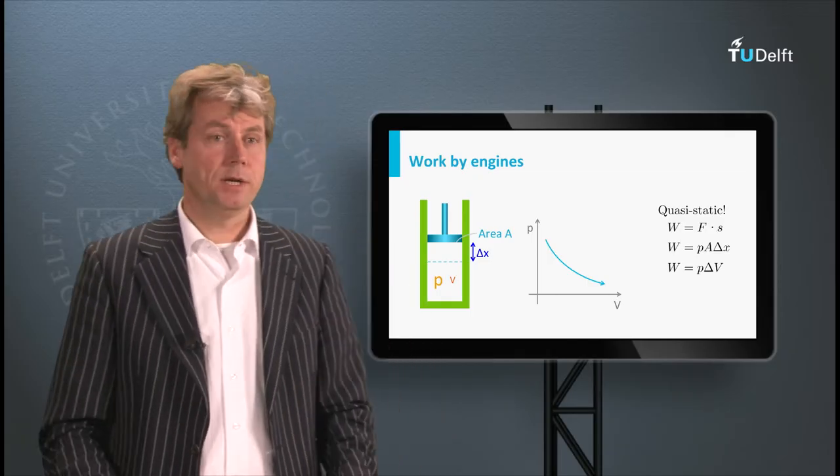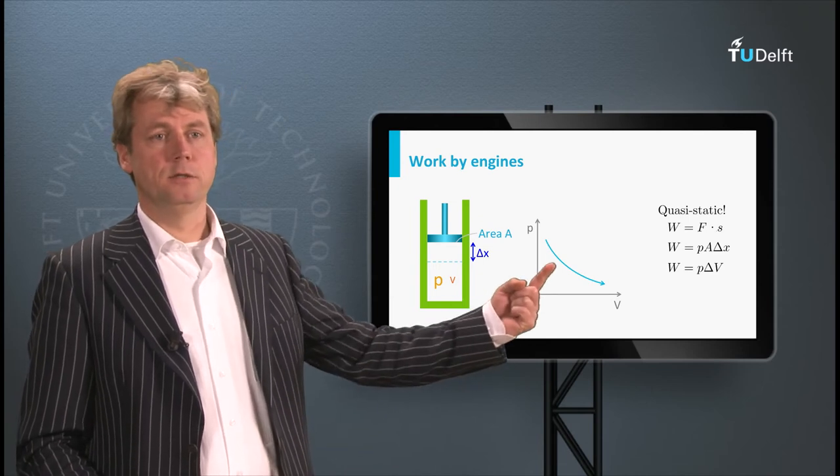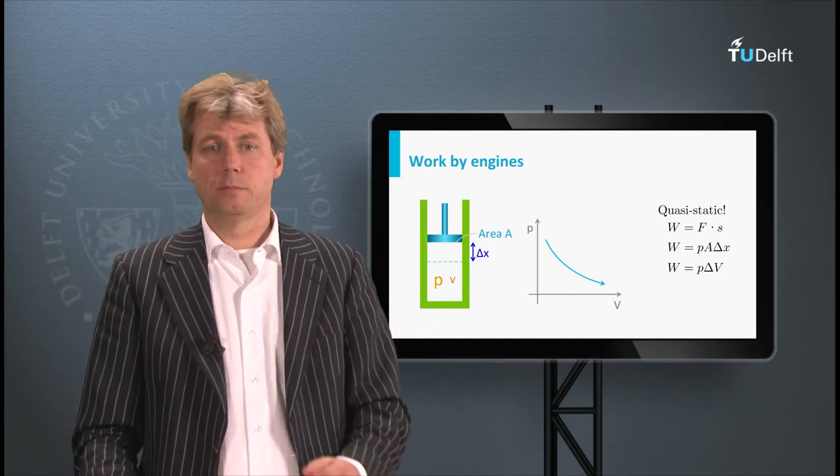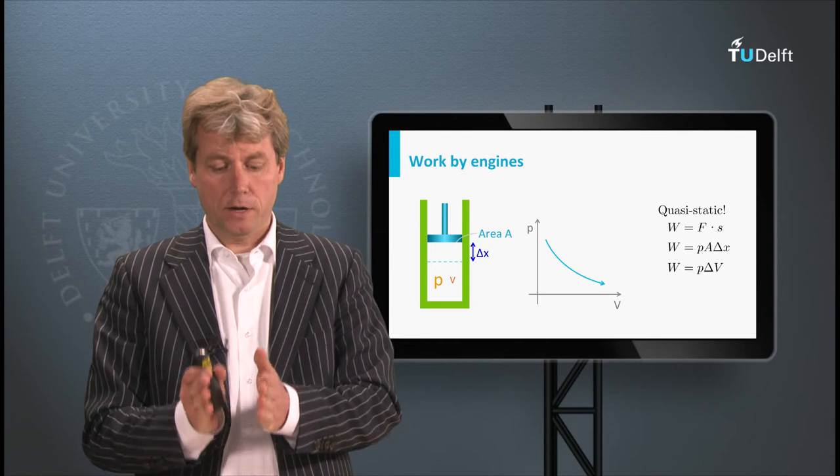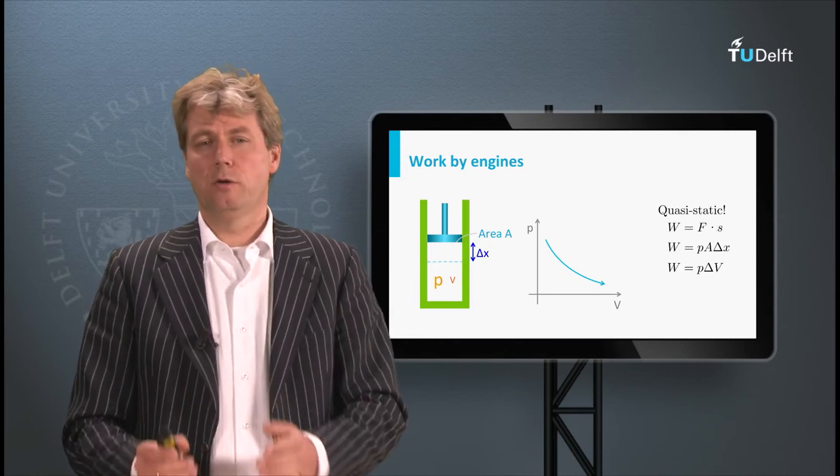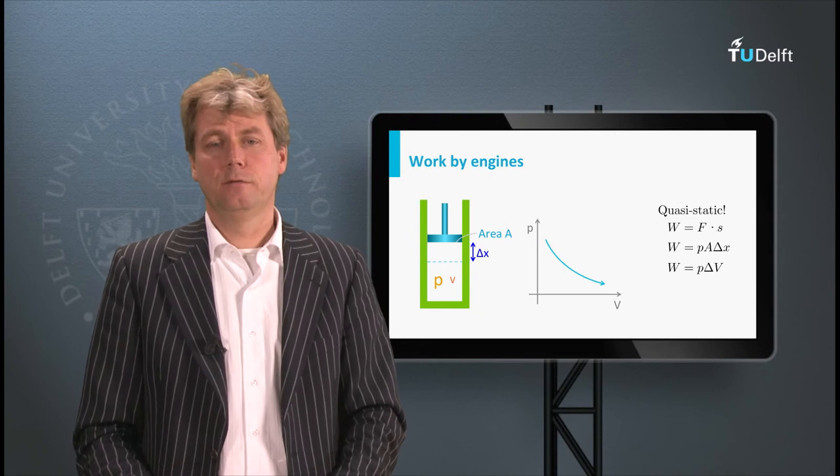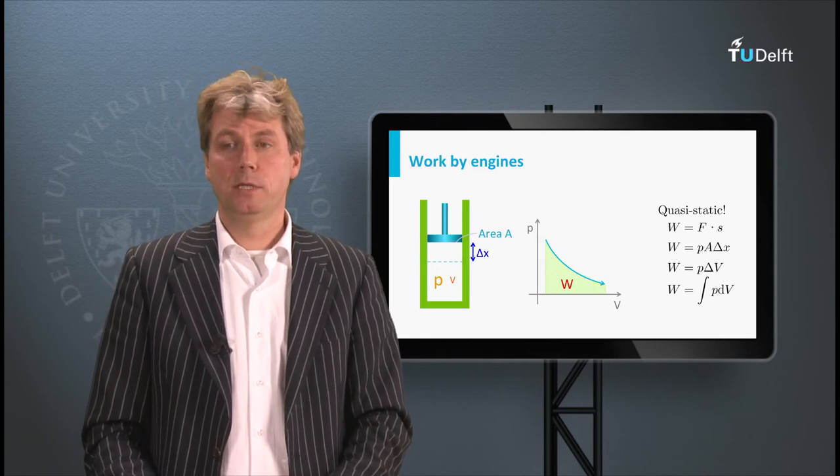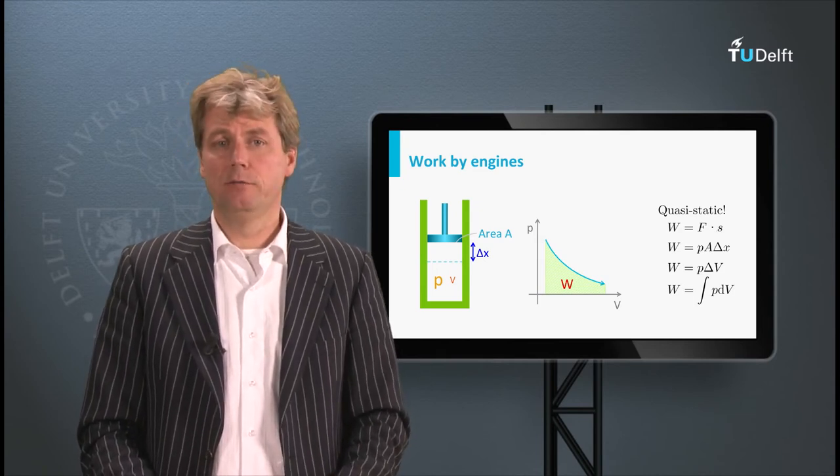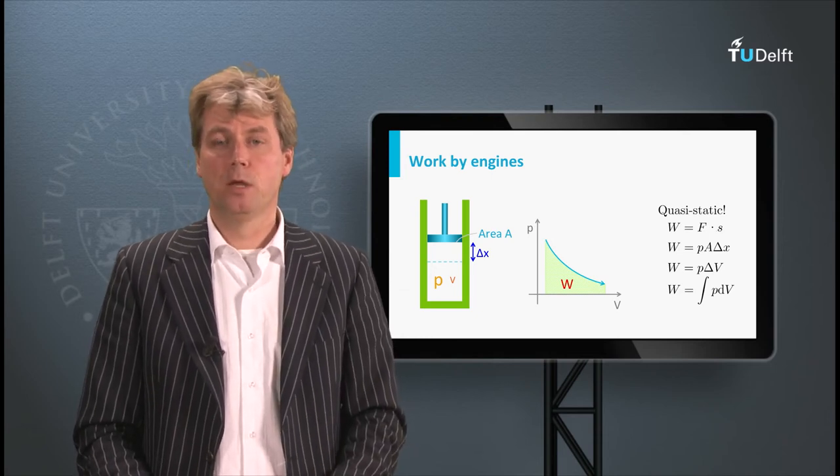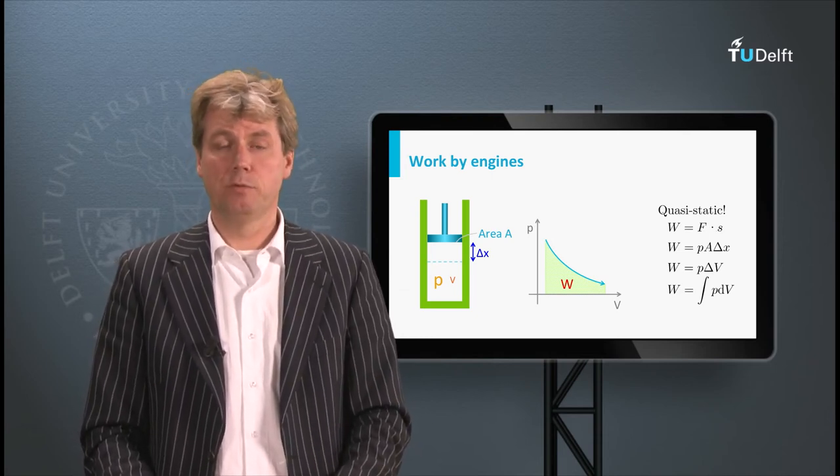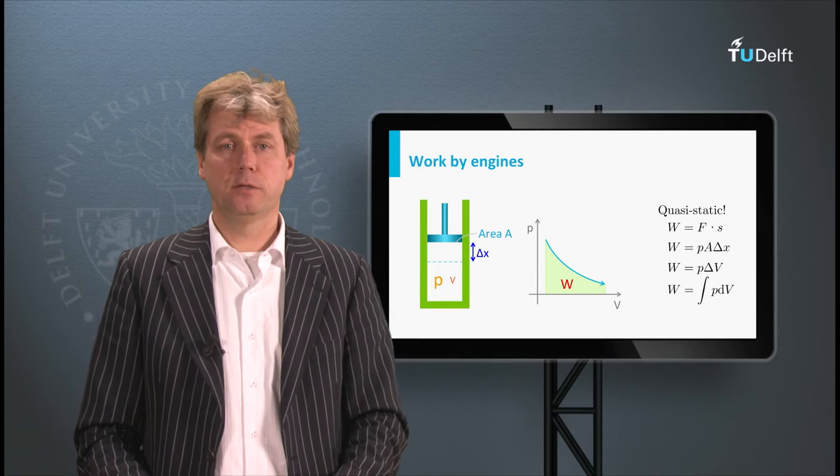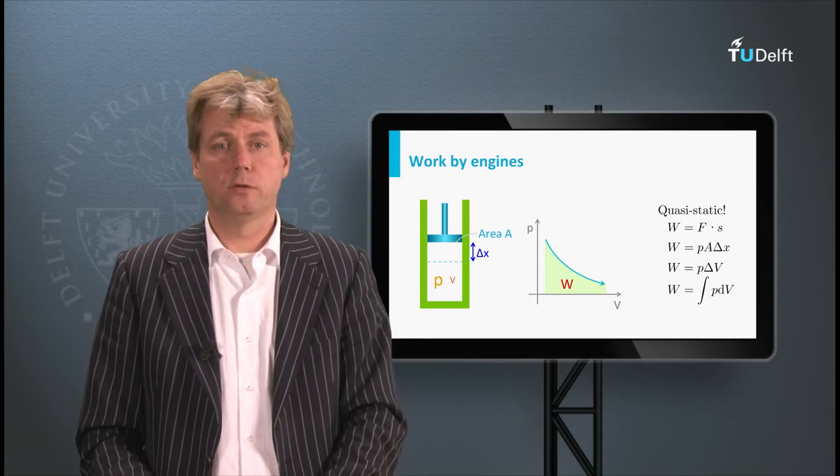But in reality the pressure will vary of course, so you will get an expansion which means the pressure gets lower when the volume gets larger. So P times delta V is a bit too simple. You might do that for very small parts, for infinitesimally small parts where the pressure is constant. But in reality you have to sum them and this means that it is basically the area underneath the graph in the PV diagram which shows the amount of energy that is performed when the gas expands. And this is the basic principle of how heat is converted into mechanical energy.